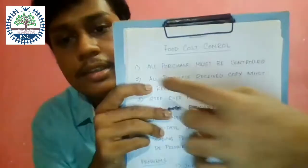To control your food cost, the first thing is that all purchases must be controlled. When you over-purchase, your food cost will be high because the cost of leftover items will be high, your closing stock will be high, and your next day's opening stock will also be high — which affects your food cost formula.